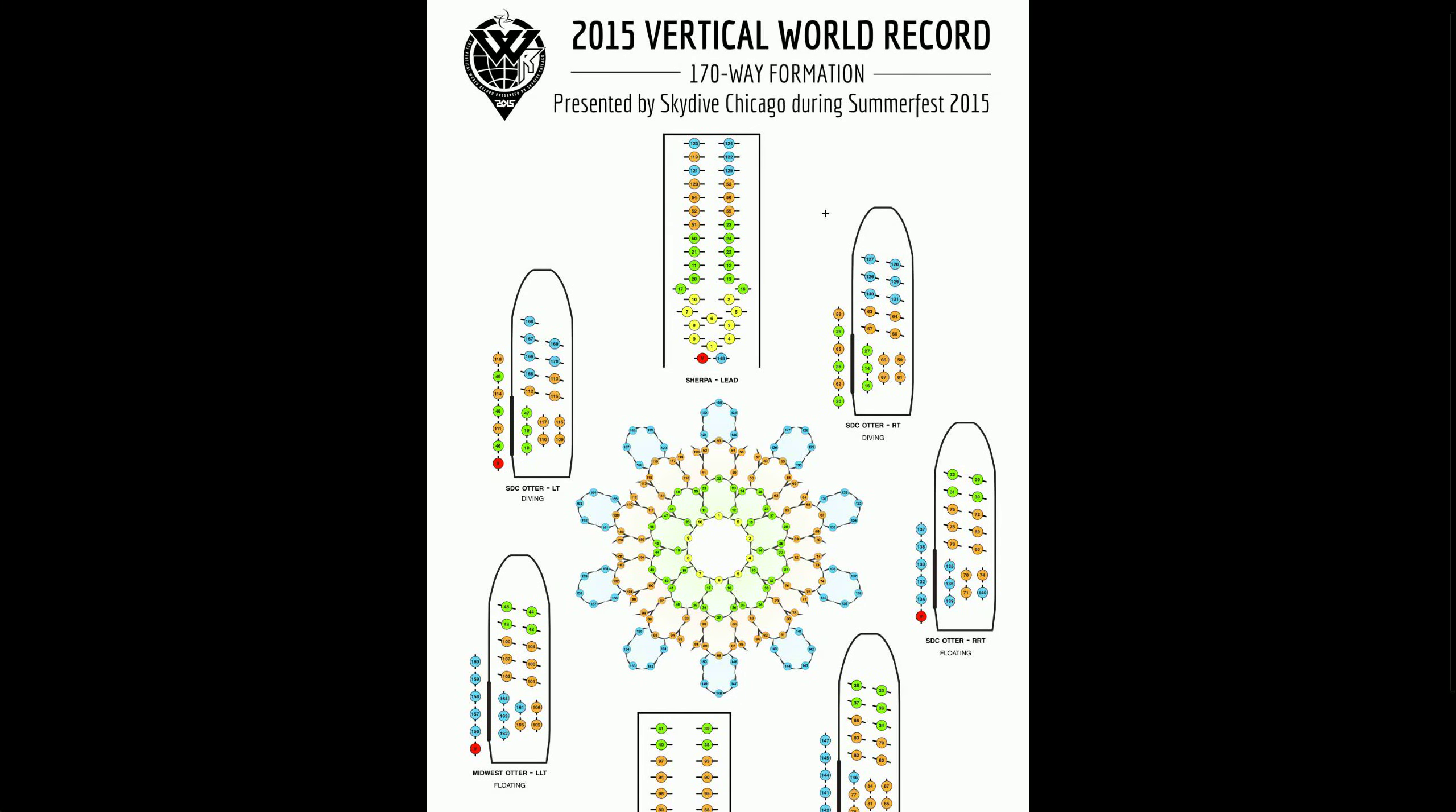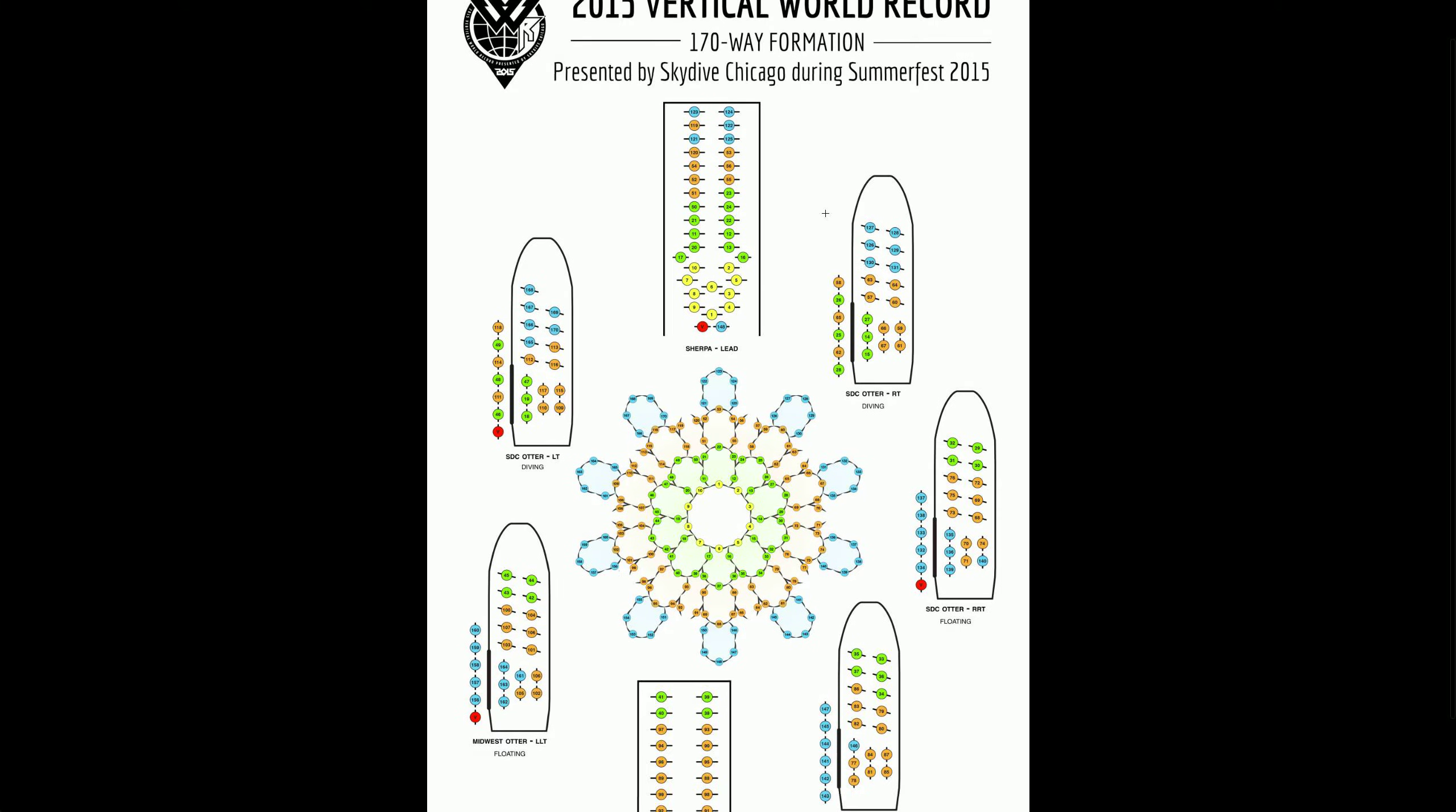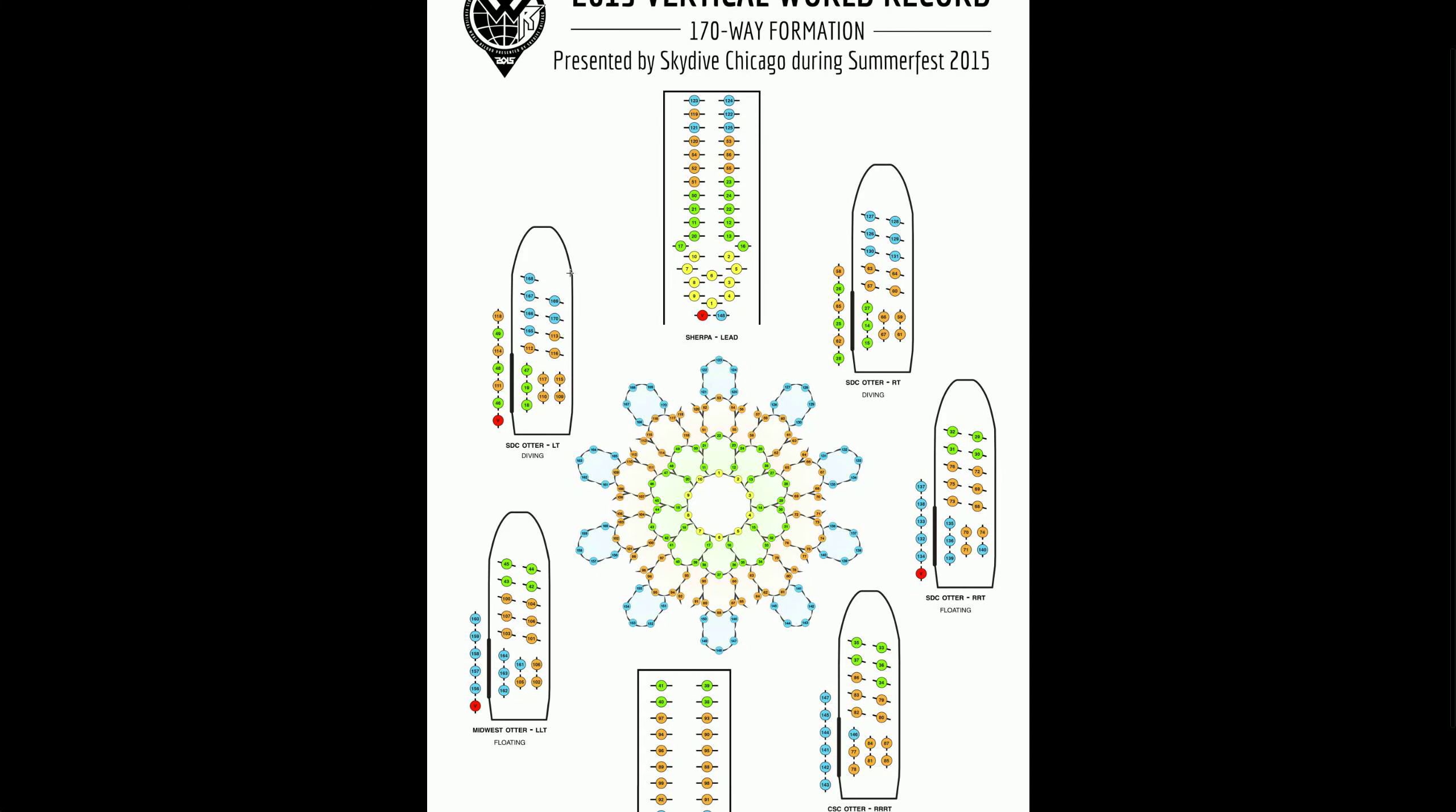First of all, it's a seven-plane formation. We have three diving airplanes and three floating airplanes on the back side here. We've had really good success with floating in the past and it helps us from eating up a bunch of altitude diving down at 200 miles an hour.